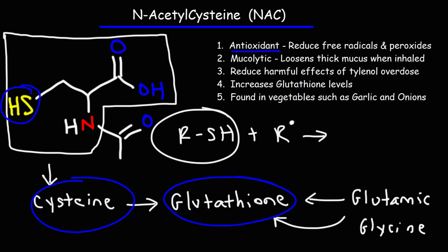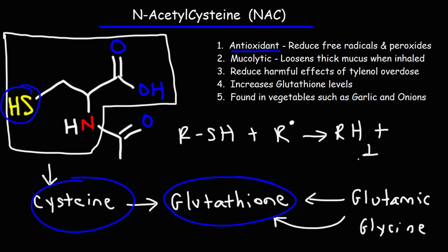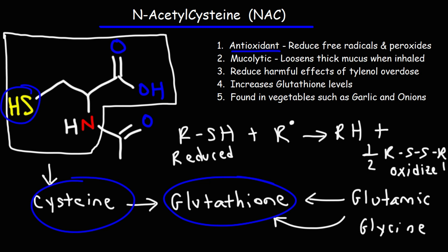Whether this be cysteine or glutathione, when it reacts with a free radical, it's going to reduce or neutralize the free radical, and the thiol group will be oxidized into a disulfide functional group. So this is the reduced form of cysteine and glutathione, and this is the oxidized form of those two molecules. Both cysteine and glutathione can behave as antioxidants, but glutathione is the master antioxidant in the body — the one predominantly used to protect cells from free radical damage and peroxides.